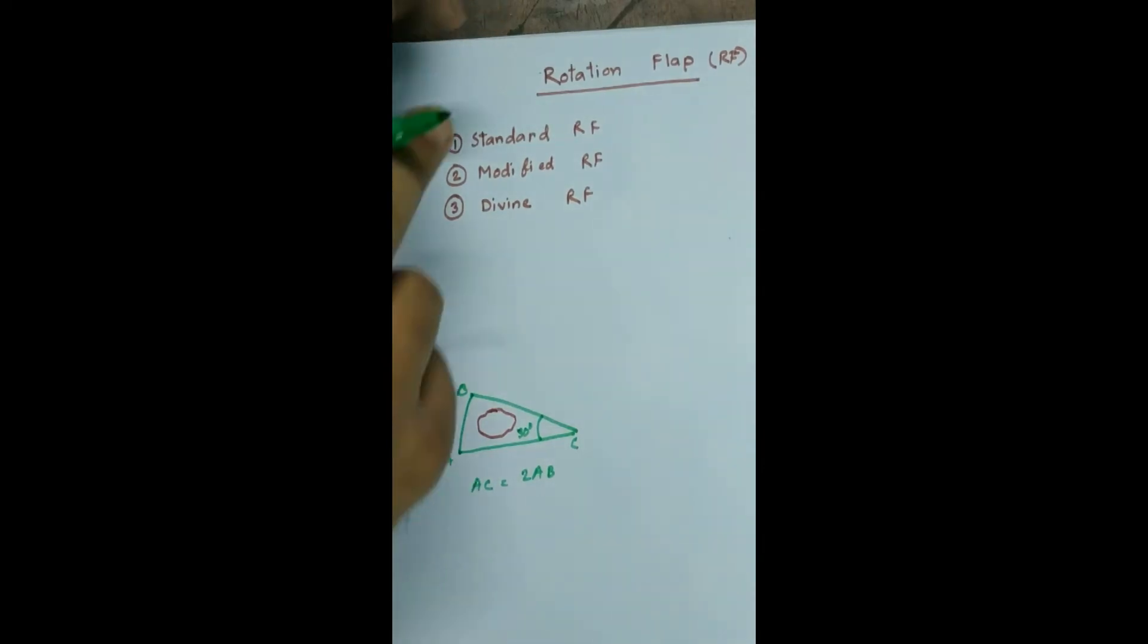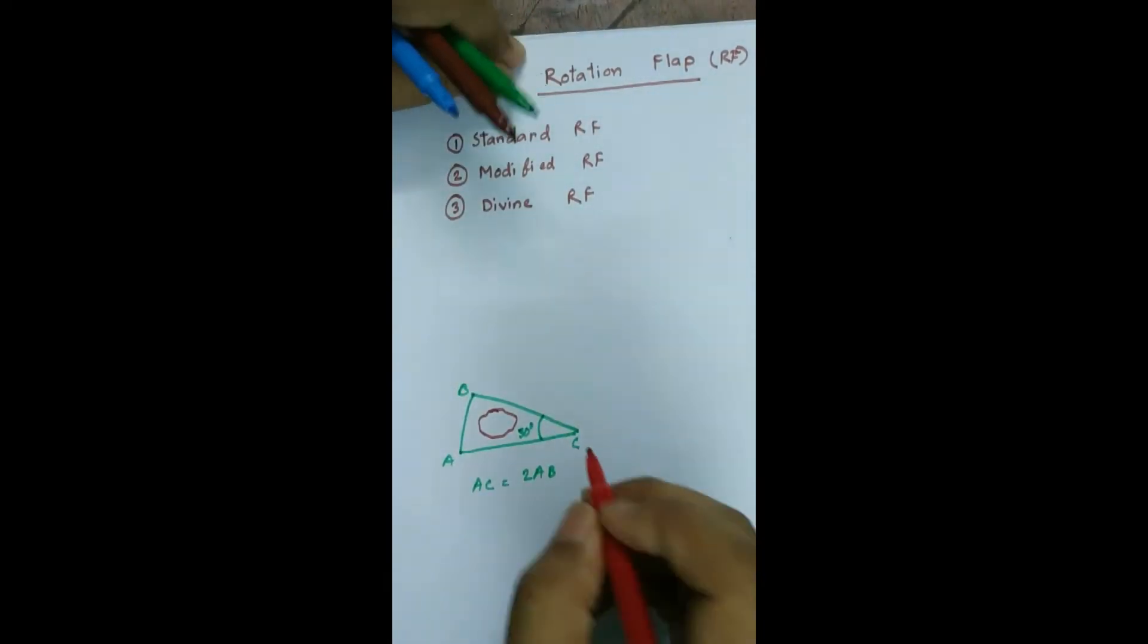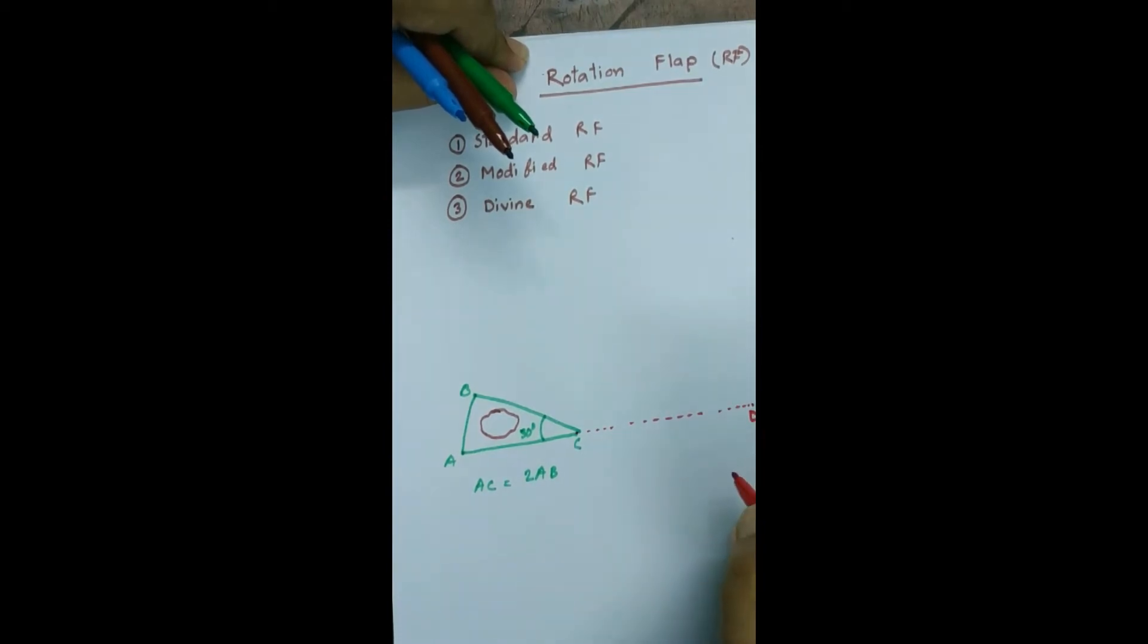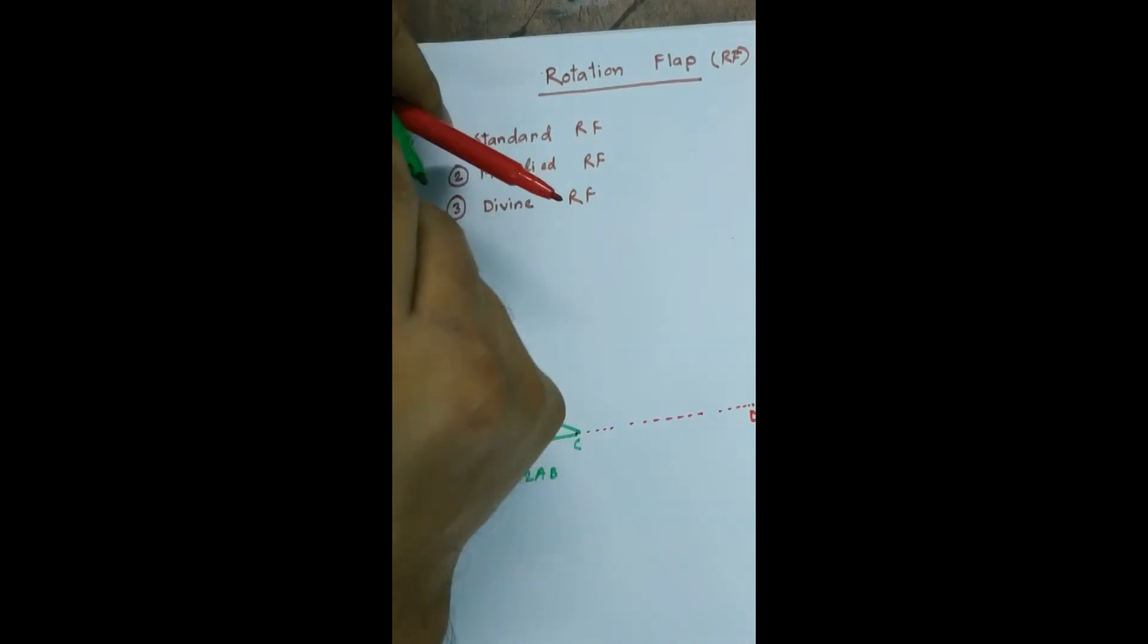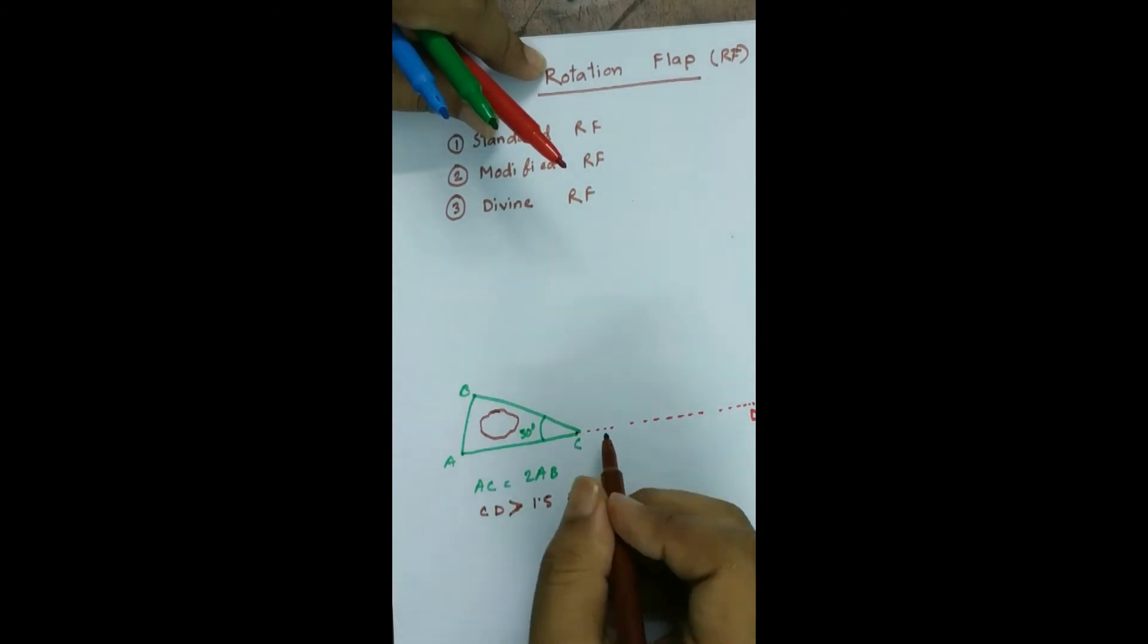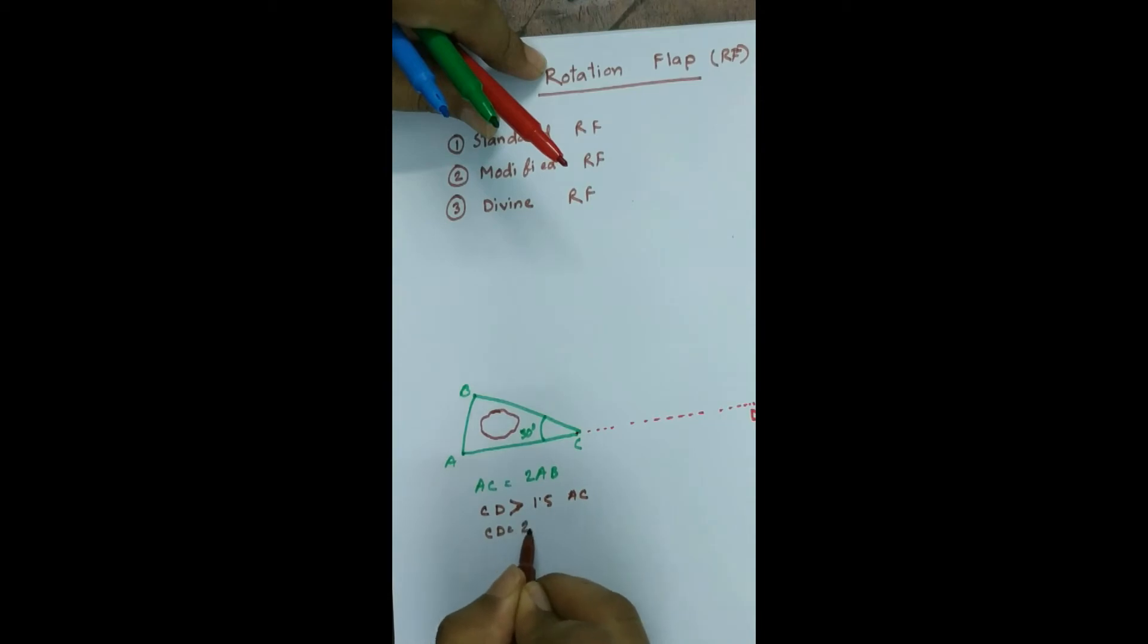So now we extend the AC up to D which is the pivot point of this flap. So the point D, the length of CD should be more than 1.5 times the AC. So assume that CD equal to 2 AC.